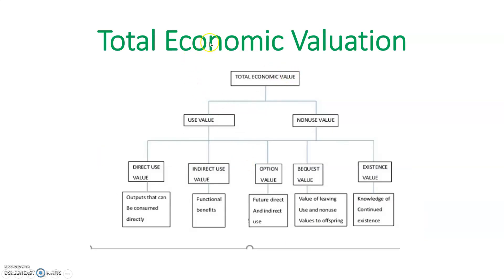Here is another figure of total economic valuation. Again, total economic value is classified as use value and non-use value. Under direct use value we have outputs that can be consumed directly, and under indirect use value we have functional benefits. Under option value we have future direct and indirect use. Under bequest value we have value of living, use or non-use, and values to offspring, that is for future generations. And then there is existence value — knowledge of continued existence or some cultural value.